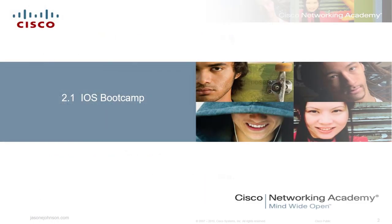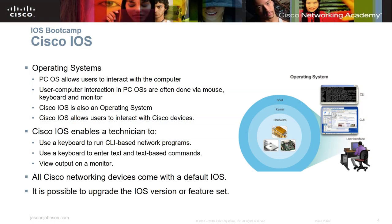On 2.1 IOS Bootcamp, when we talk about the IOS, we're talking about an operating system. When you have hardware with any Cisco device or really any computing device, you need some type of operating system to communicate with that hardware and tell it what to do. The operating system allows computers to interact with users. That interaction is often done via a mouse, a keyboard, and a monitor — input and output devices. The Cisco IOS is also an operating system that gets installed to Cisco devices.